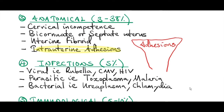Another anatomical abnormality is intrauterine adhesions. These could be caused by overzealous MVA (manual vacuum aspiration), dilatation and curettage, or chronic infections like pelvic inflammatory disease. Intrauterine adhesions are simply fibrosis inside the uterus. This fibrosis interferes with fetal implantation, placentation, and fetal growth.